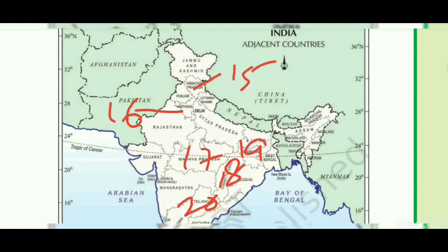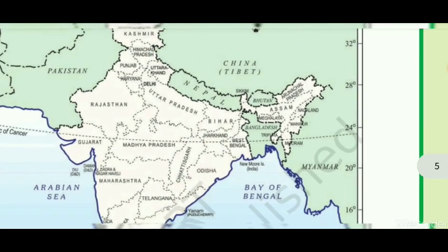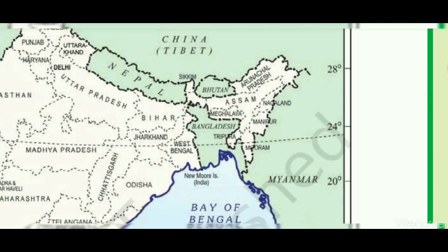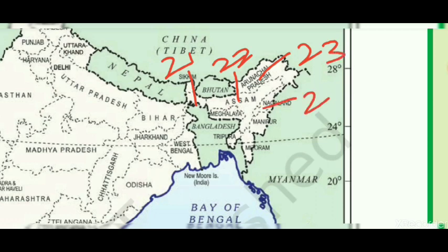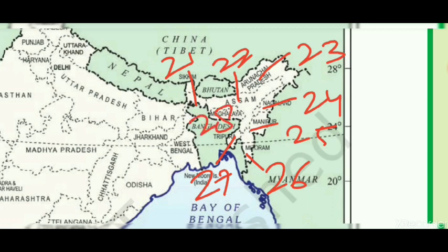Moving to the northeastern side, the remaining eight states are: 21) Sikkim, 22) Assam, 23) Arunachal Pradesh, 24) Nagaland, 25) Manipur, 26) Mizoram, 27) Tripura, and 28) Meghalaya.